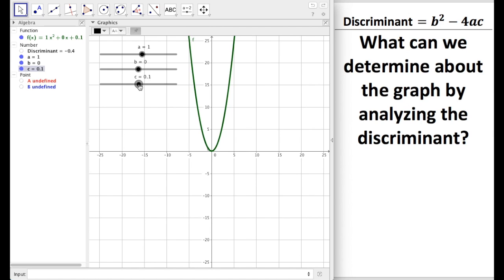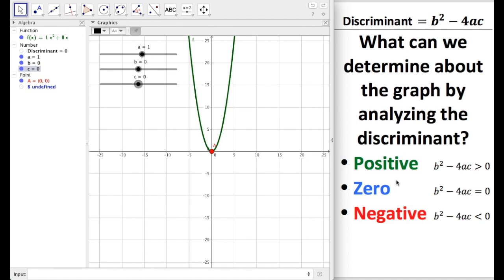I want you to grab c, just move it up and down a little bit. What do you notice about the discriminant as you move c up and down? Sometimes it's positive, sometimes it's negative, sometimes it's even zero. So that's something that we're going to be looking at today, is that the discriminant could be positive, zero, or negative.